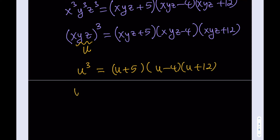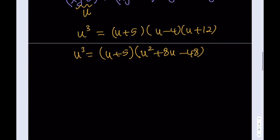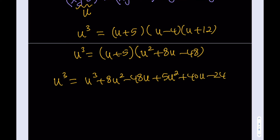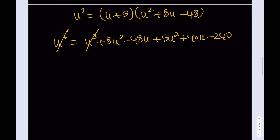Distributing the full product gives u cubed plus 8u squared minus 48u plus 5u squared plus 40u minus 240. What's really nice is that u cubed cancels out on both sides — we don't even have a cubic! Collecting terms gives 13u squared minus 8u minus 240 equals 0. We have a quadratic, and we can solve it.